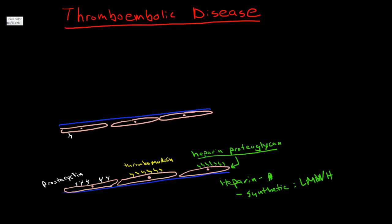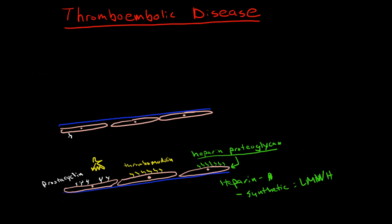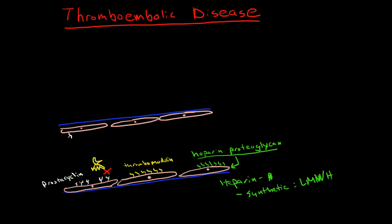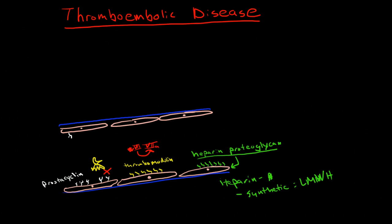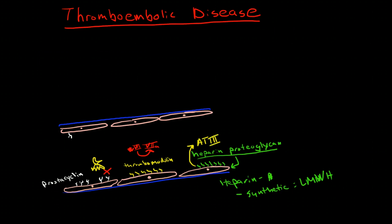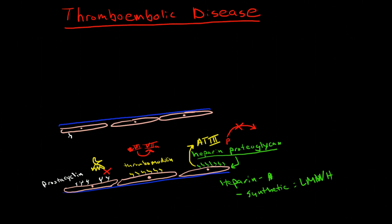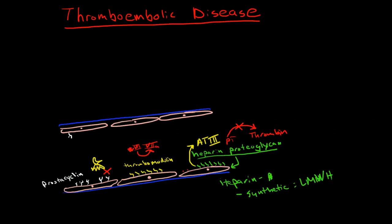Prostacyclin works by blocking platelet aggregation. Thrombomodulin works by preventing factor 7 from becoming factor 7a, so it blocks part of the clotting cascade. And heparin stimulates antithrombin 3, and antithrombin 3 blocks prothrombin from becoming thrombin. There are other chemicals similar to these active on endothelial cells, but those represent three different ways that chemicals can work to prevent clot formation.